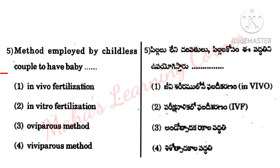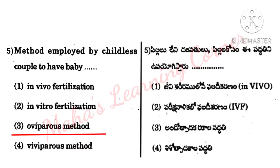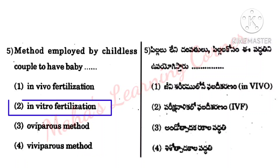Question: What method is employed by a childless couple to have a baby? Options: In vivo fertilization, In vitro fertilization, oviparous method, viviparous method. Correct answer: Option 2, In vitro fertilization (IVF).